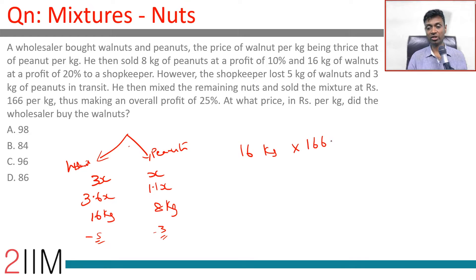at 166 per kilogram and he makes a profit of 25 percent. So this is the selling price, it should have been some cost price. I'm talking about the transaction of the shopkeeper. For the shopkeeper,